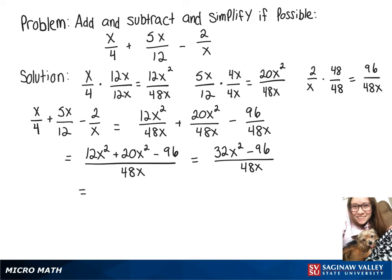And now on top and bottom, we can factor out a 16. So when we do that on top, we're left with 2x squared minus 6, and on bottom we have 16 times 3x.